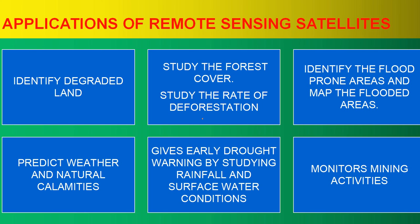Remote sensing satellites are very useful and powerful for us. They easily identify degraded land, study forest cover, and study the rate of deforestation. They can identify flood-prone areas and map flooded areas. They can predict weather and natural calamities, and give early drought warnings by studying rainfall and surface water conditions. They can monitor mining activities and provide information for defense and intelligence. Remote sensors also measure parameters from a location of safety — for example, a non-contact infrared thermometer allows firemen to determine the temperature inside a burning building without entering.